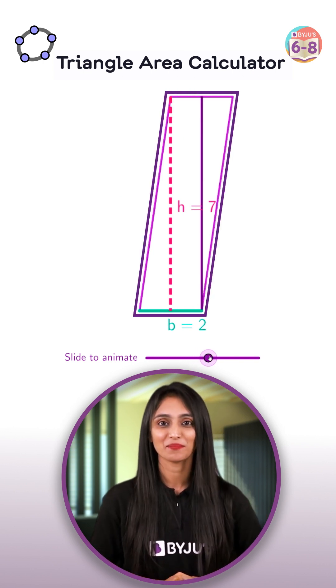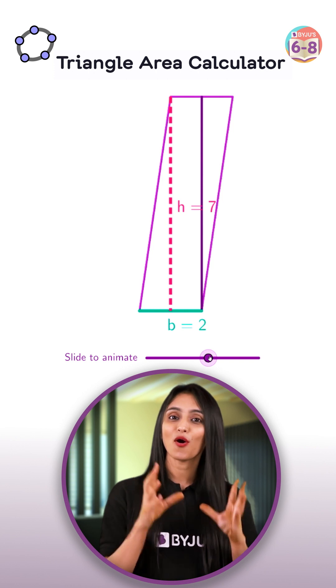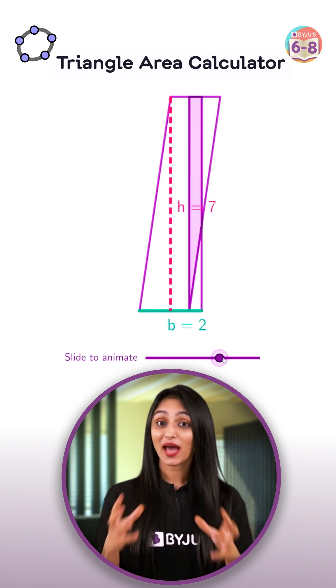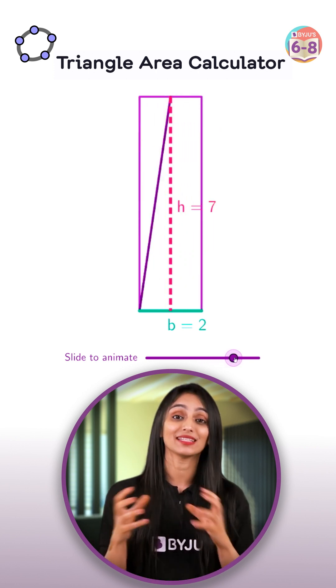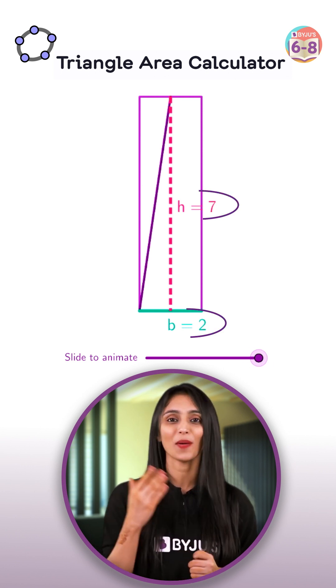Now is the amazing part. By just adjusting a part of the inverted triangle, this parallelogram gets converted into a rectangle having the same dimensions, 2 by 7.